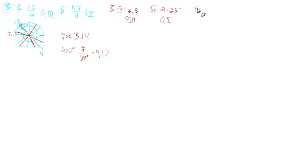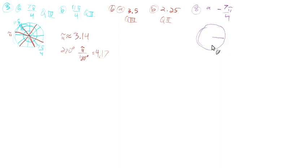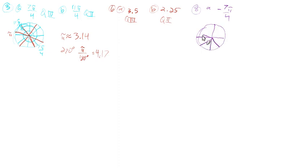Now we'll look at number 8, part A: negative 7π over 4. We're supposed to sketch that in standard position. It's negative, so we want to go clockwise. We count in the negative direction — negative π over 4, negative 2π over 4, negative 3π over 4, all the way to negative 7π over 4. That's a sketch in standard position, just with an arrow curving clockwise around to show where we land.